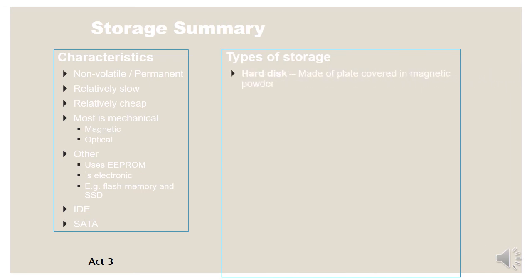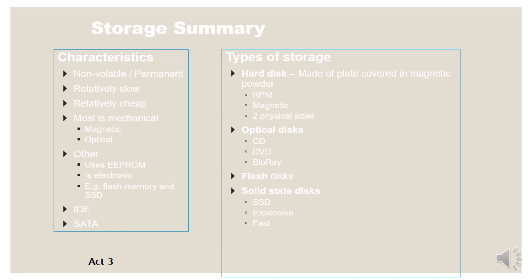The types of storage: hard disk, made of platters covered in magnetic material, with rotations per minute as a key spec, available in 3.5 and 2.5 inch sizes. Optical disks include CDs, DVDs, and Blu-ray. Flash disks are the little brother of the solid state drive, also called an SSD. They are expensive but much faster than the magnetic hard drive.